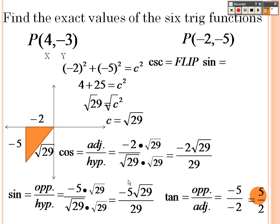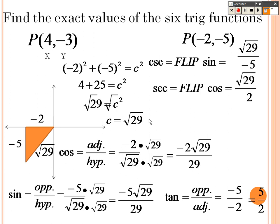To find the reciprocal functions, it's easier to flip the original un-rationalized forms. Flipping sine gives cosecant as square root of 29 over negative 5. Flipping cosine gives secant as square root of 29 over negative 2. And flipping tangent to get cotangent gives 2 fifths.